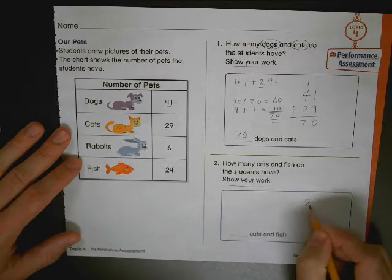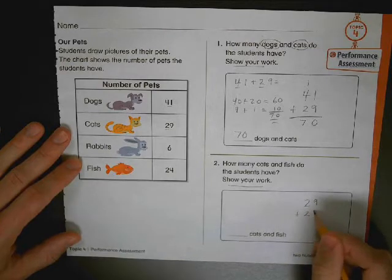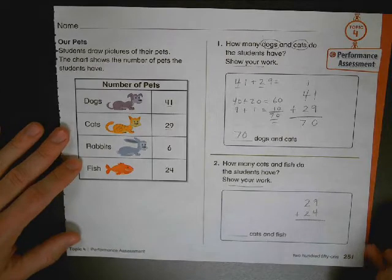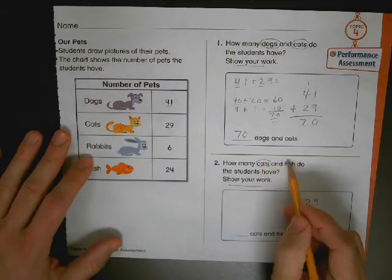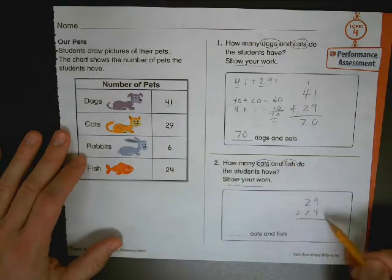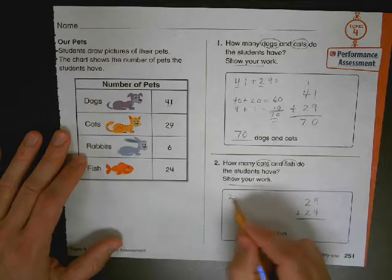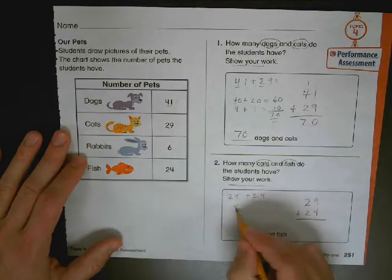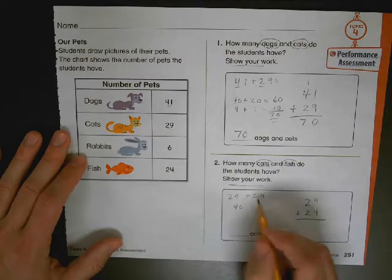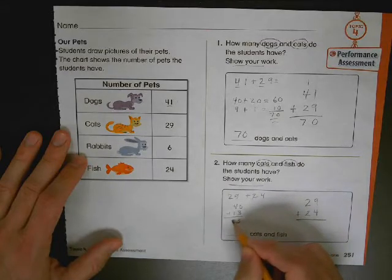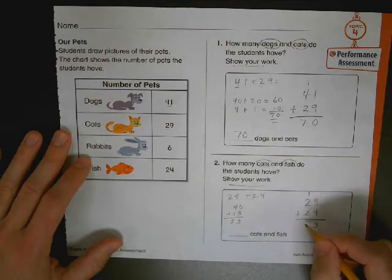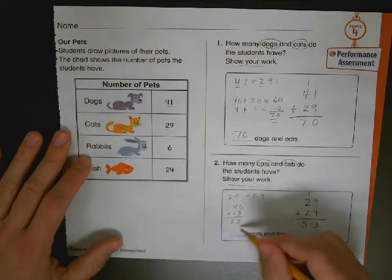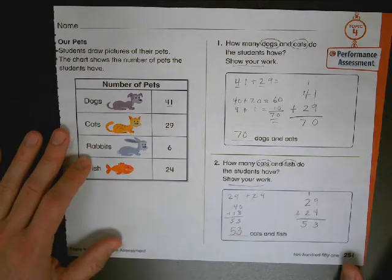When you're working on addition, you need to make sure that they're lined vertically. Twenty-nine plus twenty-four. Let's just check: I have cats, I have fish. Twenty-nine, twenty-four. For partial sums: twenty-nine plus twenty-four, two tens, two tens is forty. Nine ones, four ones. Nine ones, four ones, thirteen. Partial sums doesn't require any regrouping: fifty-three. Let's check over here. Nine plus four, thirteen. Regroup the one. Two plus two is four, plus one more is five. Wow, partial sums, regrouping, same answer, same sum: fifty-three.